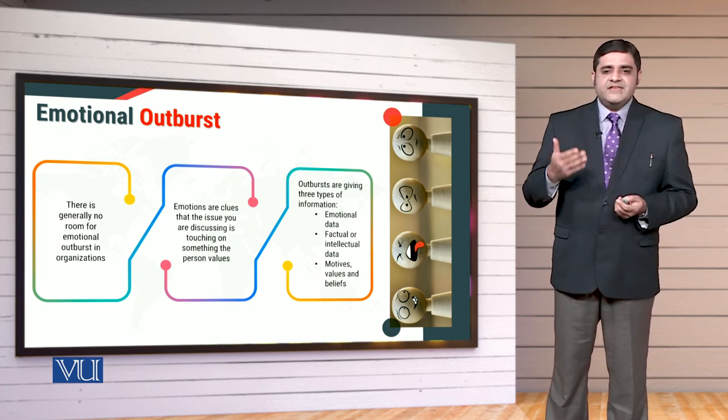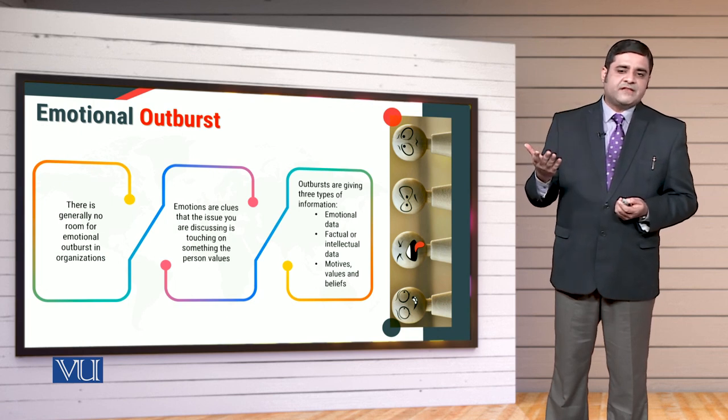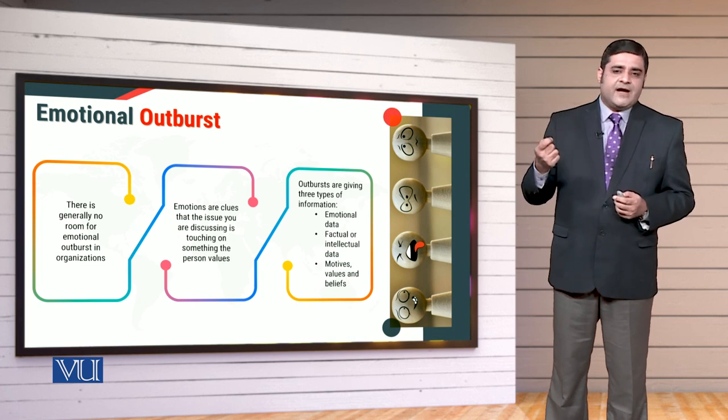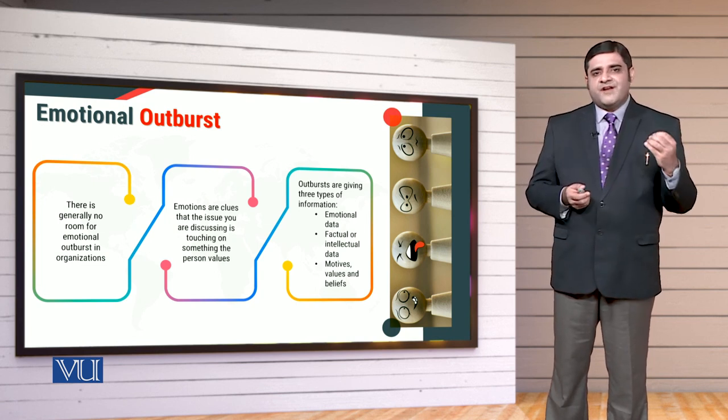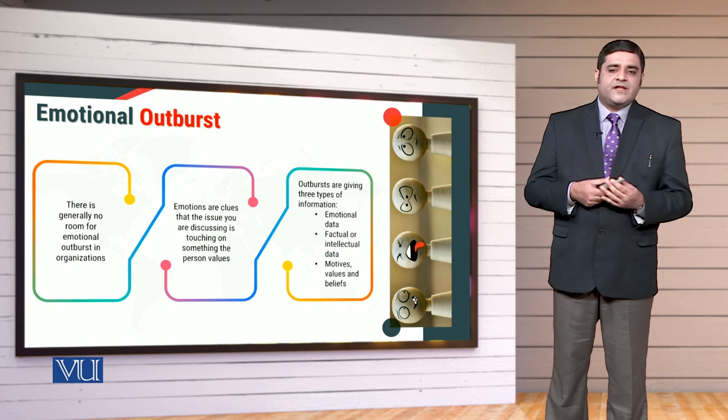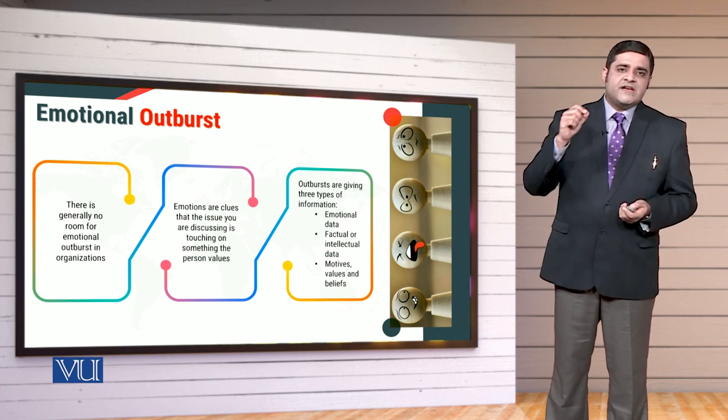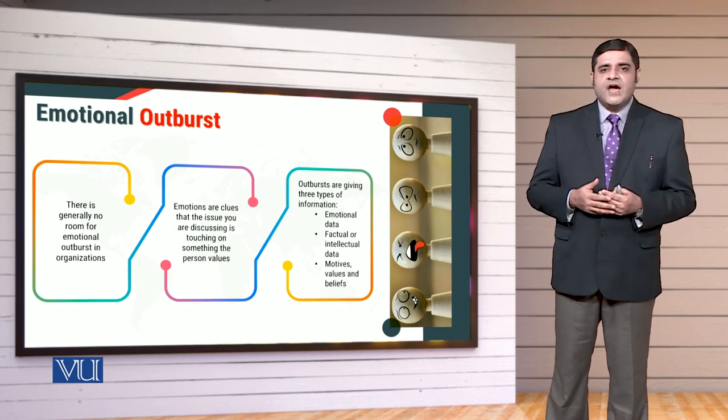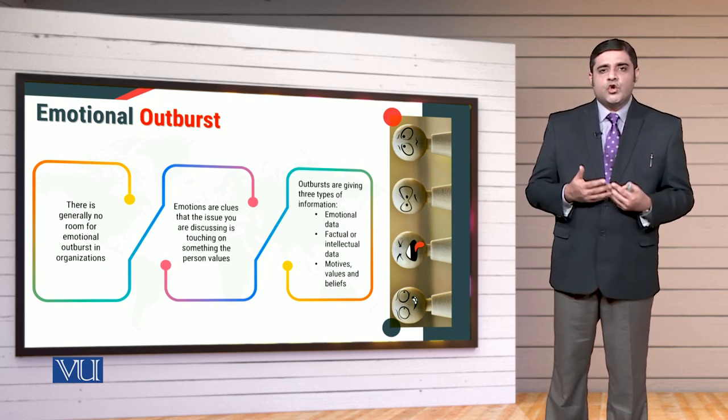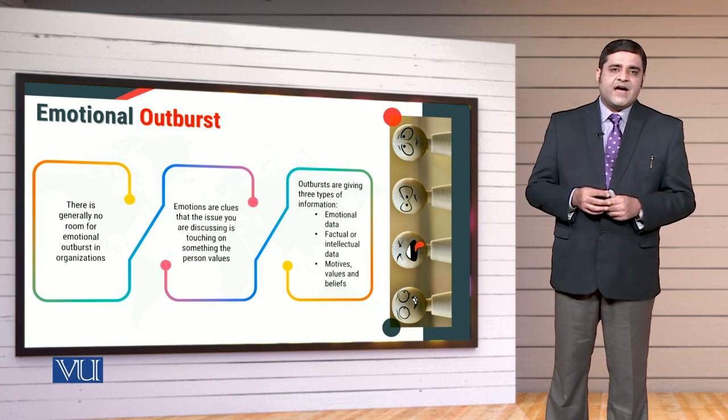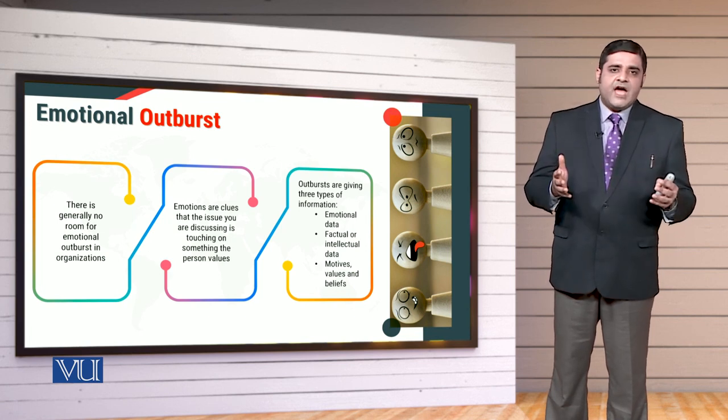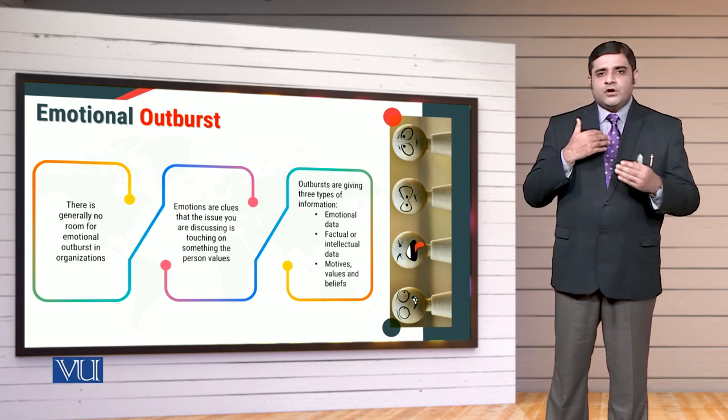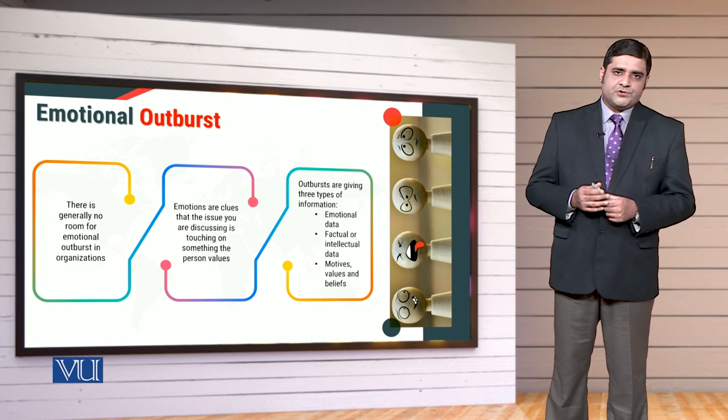At the same time yaad rakhiye ke jab hem emotional outbursts ki baat karte hain, so there are few things that we also need to come up with. We need to collect the emotional data. We need to come up with factual facts and figures. And we need to come up with motives and involvement and interests of the people in different tasks and associations. Or humeh yeh dekhna hoga ke har ek aspect ke andar logon ki involvement kaisi hai. Because in cheezon ko visualize kiye baghair hemare liye unko control karna, manage karna, coach karna, mentor, relationship qaim karna wo obviously difficult hoga.